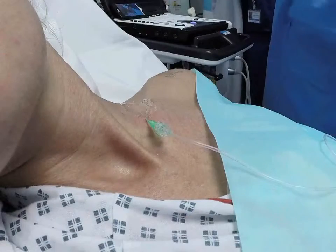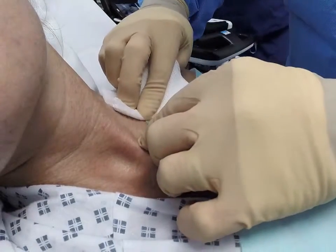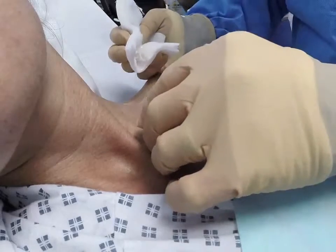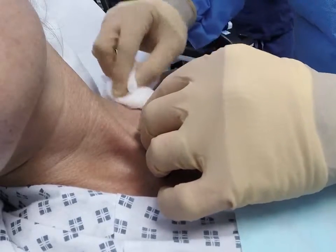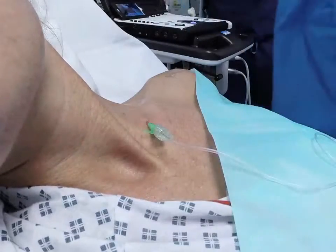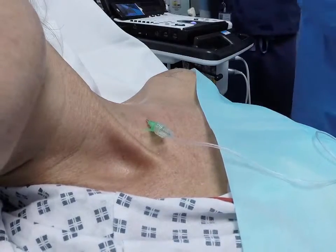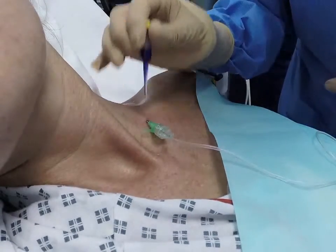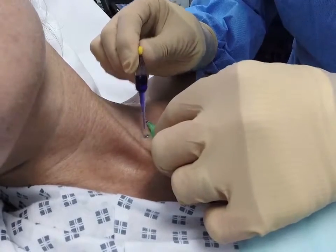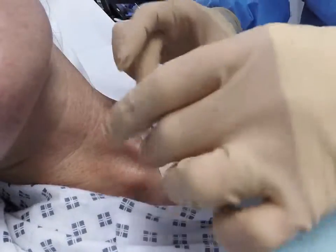The catheter is then secured in the usual fashion using tissue adhesive, stereostrips and tegaderm as here, or using Pajunk's own fixation device, the FixerCath, and we've made a separate video of that to show you how that works.